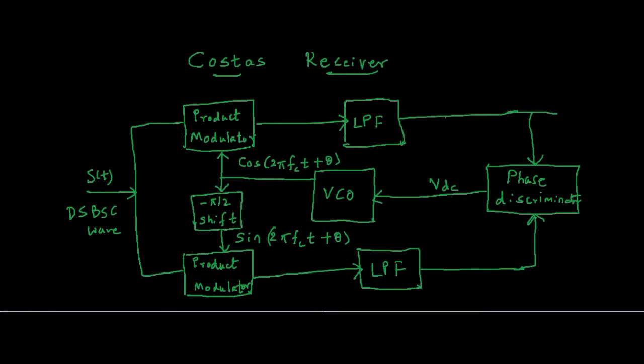Hello all, welcome to the new video of signals and systems. In this video, we will see the working of Costa's Receiver. Costa's Receiver is a negative feedback system that is used to generate the local carrier necessary for the demodulation of DSBSC signals.